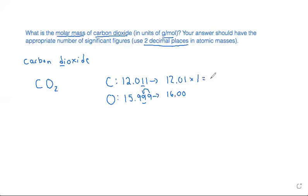But I have a two subscript on the oxygen. That means that I have two oxygens, so I have to multiply the molar mass by two, which gives me 32.00.